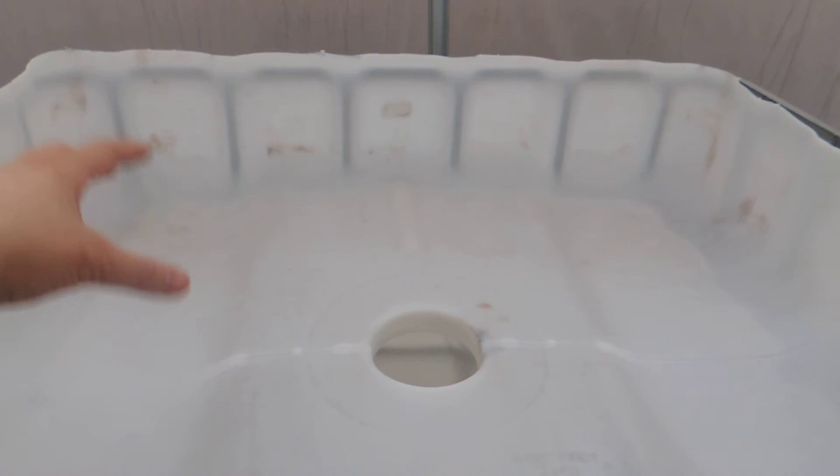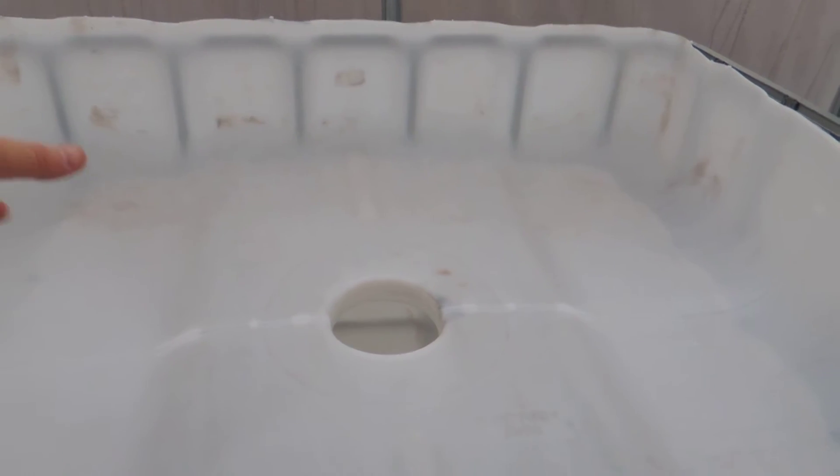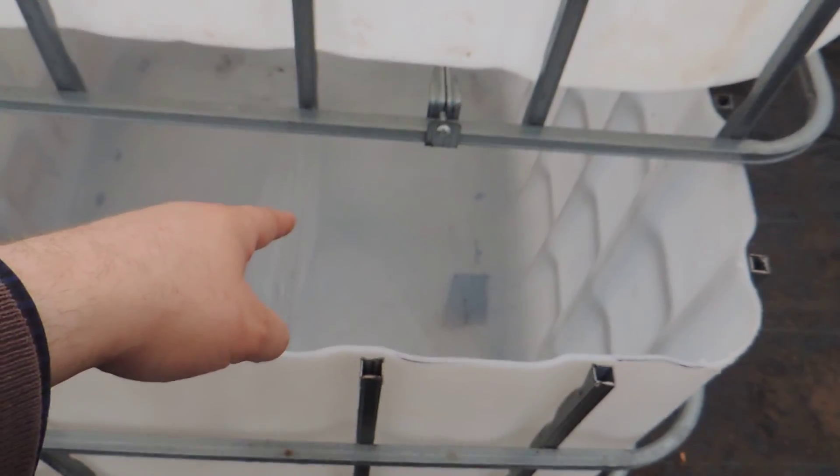Once the PVC tubing is right along the back, the water is going to go through. We're going to have this all filled with hydroton and water's going to go through this into here. We're going to have a bell siphon over in one of these ends and the water is going to fill up and the bell siphon automatically creates a siphoning action and the water is going to go into the sump tank which is below.